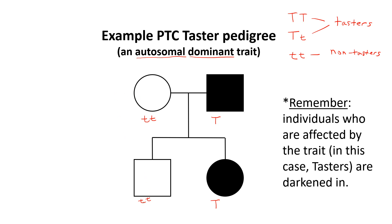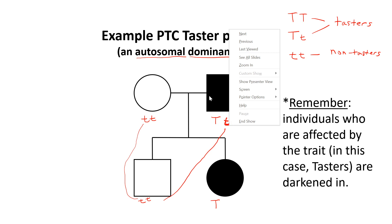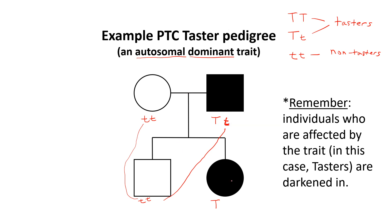This son got one allele from his mom. The other one must have come from his dad — you can't make a baby without two parents. So if the son is a non-taster with two small t's, one small t came from his mom, and the other came from his dad, telling us his dad must be heterozygous — big T and small t. Here we have a daughter who's a taster — we don't know her second allele. Her big T came from her dad, which means the other allele — the small t — came from her mom. That's how you figure out genotypes for individuals in a pedigree.